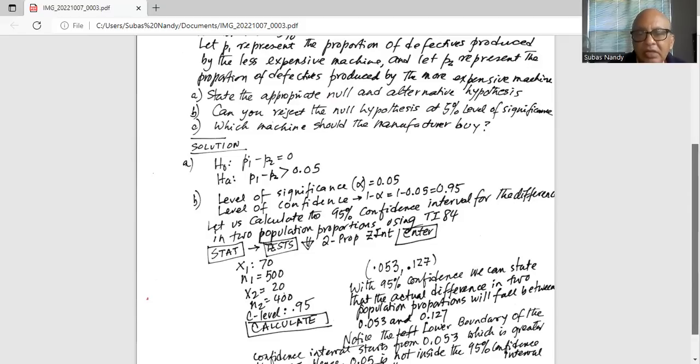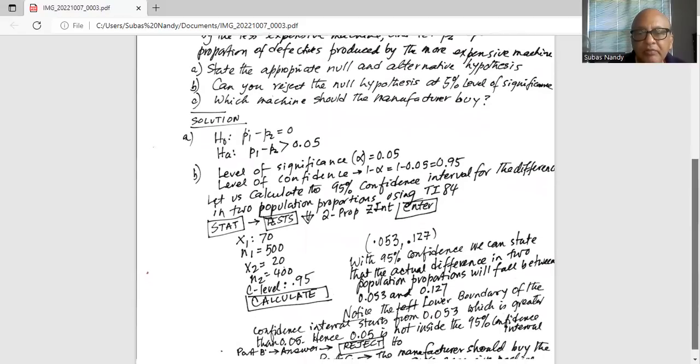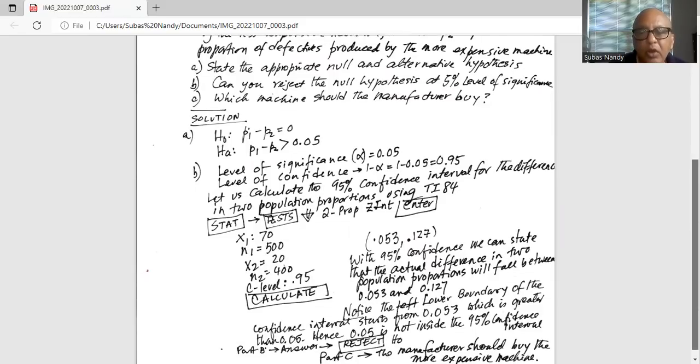And we get the interval boundaries. The lower boundary is 0.053, the upper boundary is 0.127. With 95% confidence, we can state that the actual difference in two population proportions will fall between 0.053 and 0.127.